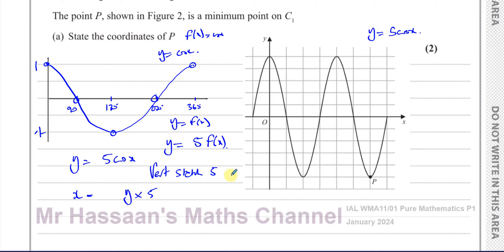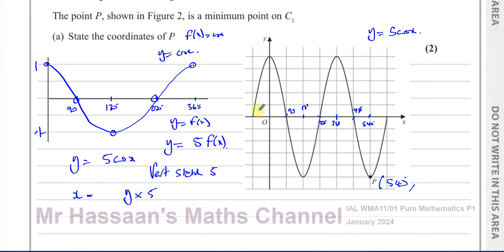To find the coordinates of P, the x-coordinates haven't changed: 90, 180, 270, and 360 remain the same. The cosine curve repeats — you can copy and paste it — and the key points are separated by 90 degrees. So from 360, another 90 gives 450, and another 90 gives 540. We can see that P has an x-coordinate of 540, just as it would for y equals cosine x, following the repeating pattern.